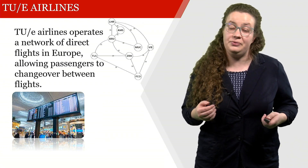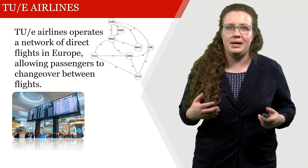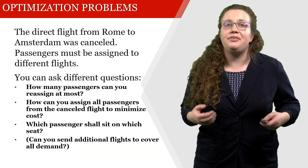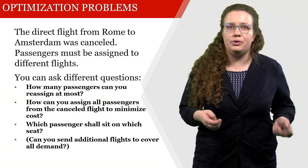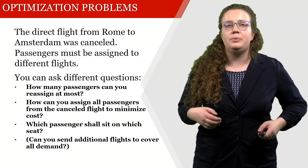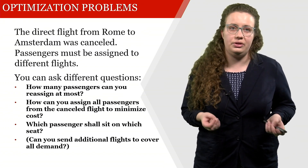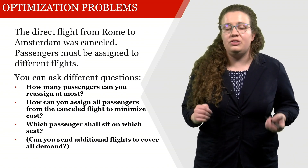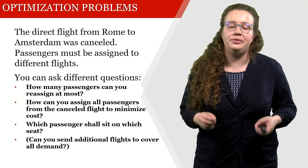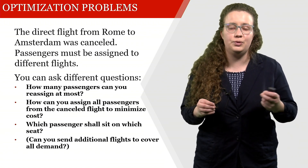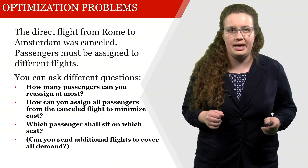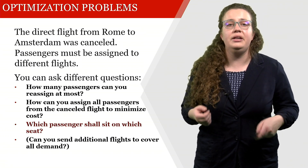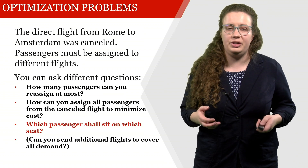TU Airlines operates a network of direct flights in Europe, allowing passengers to change over between flights. Their direct flight from Rome to Amsterdam was cancelled, which means that passengers must be reassigned to different flights. We determined that two people had to fly directly from Rome to Toulouse and continue from there. Now we would like to determine which passenger shall sit on which seat.